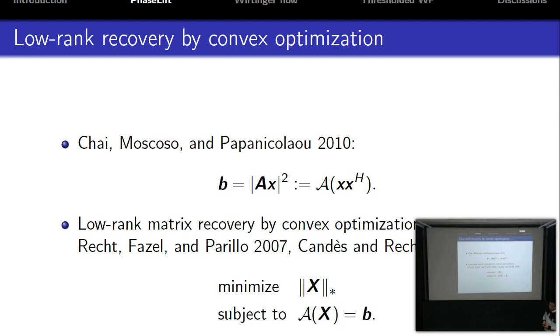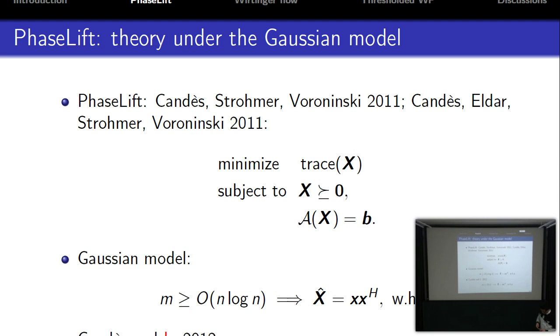There are two famous papers. One is by Recht, Fazel, and Parrilo in 2007 for matrix sensing, and another paper is by Candès in 2008. We can recover the low-rank matrix by minimizing the nuclear norm subject to linear constraints. For phase retrieval, we know that the matrix is also positive semi-definite, so we can add this property as a constraint into the convex optimization. Papers by Candès and Eldar propose this optimization and prove interesting theoretical results under the Gaussian model.